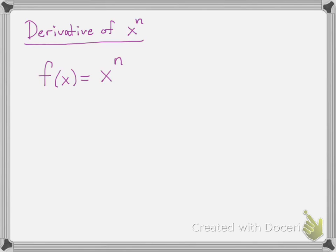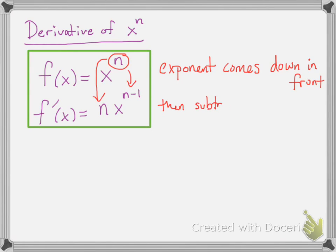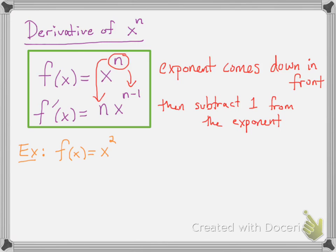The next rule is called the power rule. It's the way to take the derivative of x to any power — x to the n. The derivative is n times x to the n minus 1. You bring that exponent down in front, and then subtract 1 from the exponent. For example, with f of x equals x squared, take that 2 and bring it down in front, subtract 1 from the exponent. Since x to the 1 is just x, you can rewrite that as 2x.